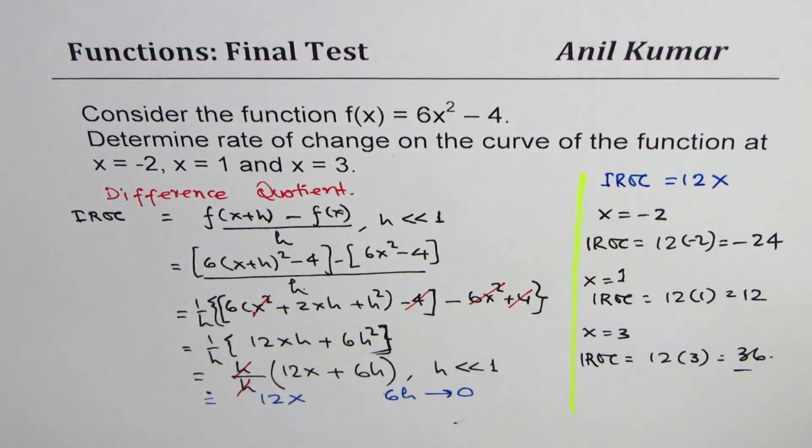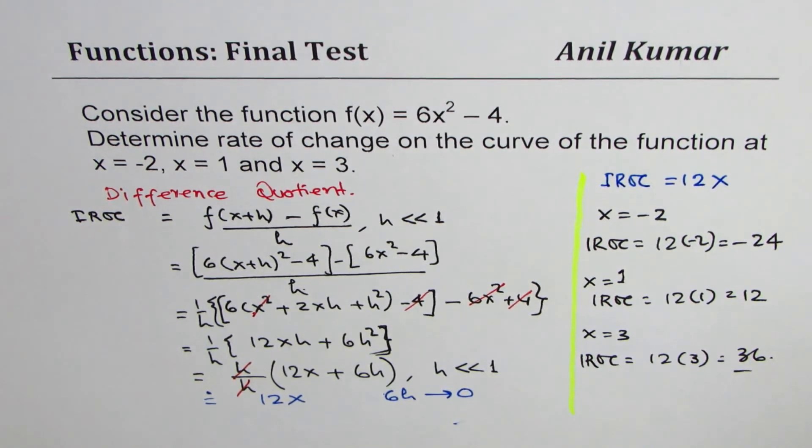So these are the answers of rate of change at the given points on the curve of function 6x² - 4. I hope that helps. Thanks for watching and all the best.